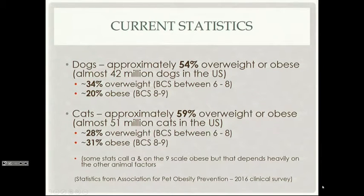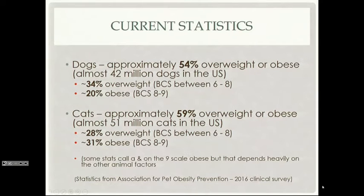Current statistics: approximately 54% of dogs are overweight or obese. These are 2016 Association of Pet Obesity Prevention numbers from a clinical survey. Roughly 54% of dogs and 59% of cats are at least overweight, if not obese. Around 34% of dogs have a body condition score between 6 and 8 — that's overweight — and approximately 20% are obese, which is roughly a BCS between 8 and 9. That means roughly 42 million dogs are at a minimum overweight.